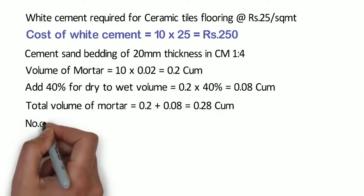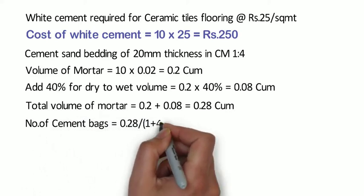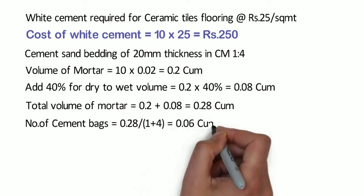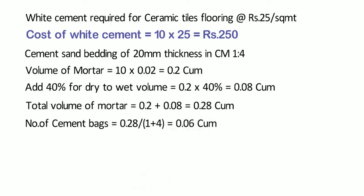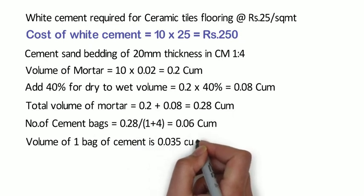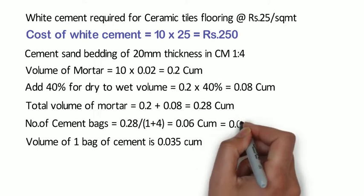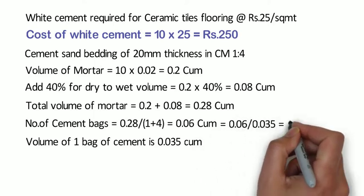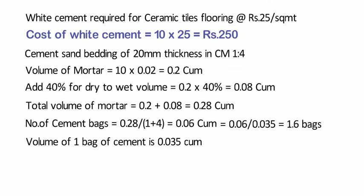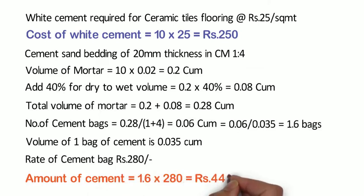Now we will calculate the number of cement bags. The formula is 0.28 ÷ (1 + 4) = 0.06 cubic meter. Here 1:4 is the proportion of cement mortar, hence cement part is 1 + 4 = 5. The volume of 1 bag of cement is 0.035 cubic meter, so dividing: 0.06 ÷ 0.035 = 1.6 bags. Considering the rate of a cement bag at 280 rupees, amount of cement required shall be 1.6 x 280 = 448 rupees.